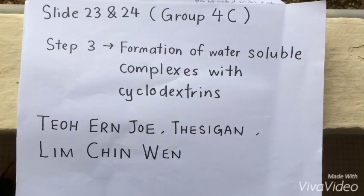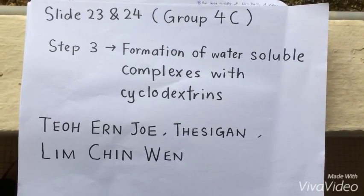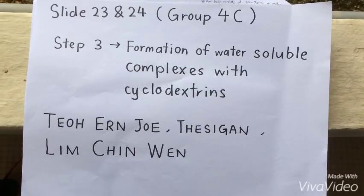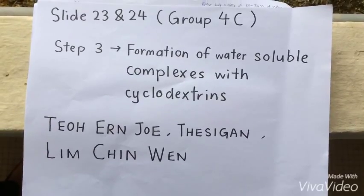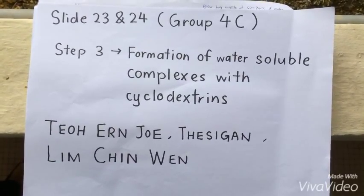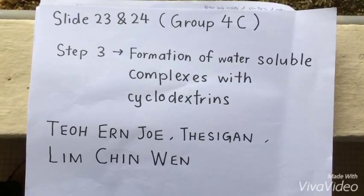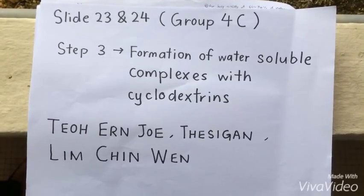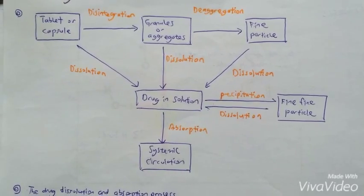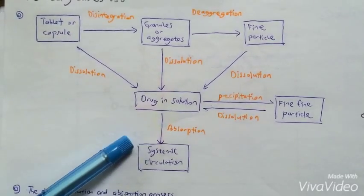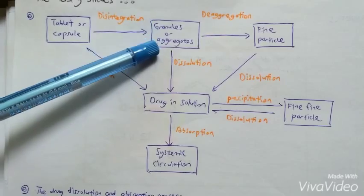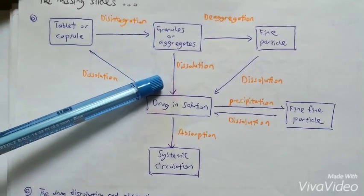Good day. We are from group 4C and are going to discuss slides 23 and 24 regarding the formation of water-soluble complexes with cyclodextrins. Before being absorbed into the systemic circulation, the drug must be dissolved in our gastrointestinal tract.